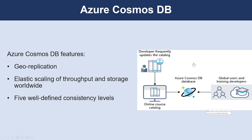Azure Cosmos DB is a schema-agnostic database engine. It automatically indexes all data without requiring you to deal with schema and index management. It's also multi-model and natively supports document, key-value, graph, and column-family data models. Some features include geo-replication, elastic scaling of throughput and storage worldwide, and five well-defined consistency levels.